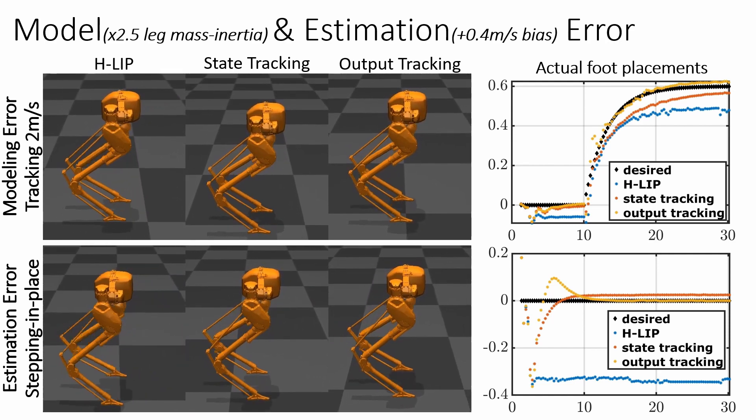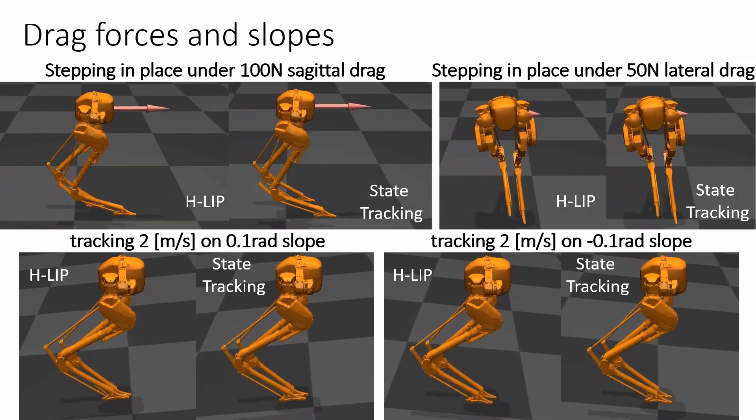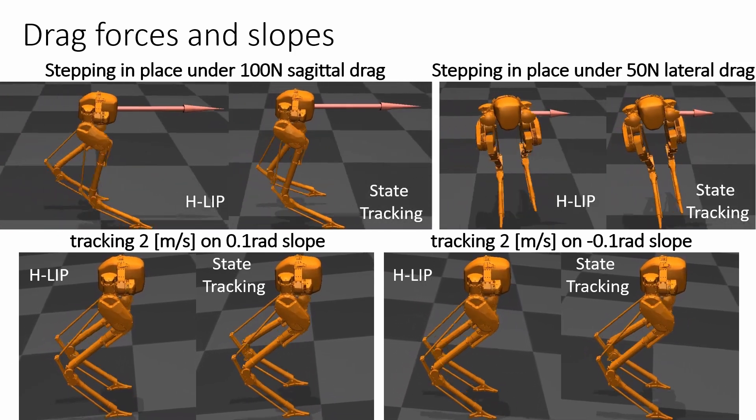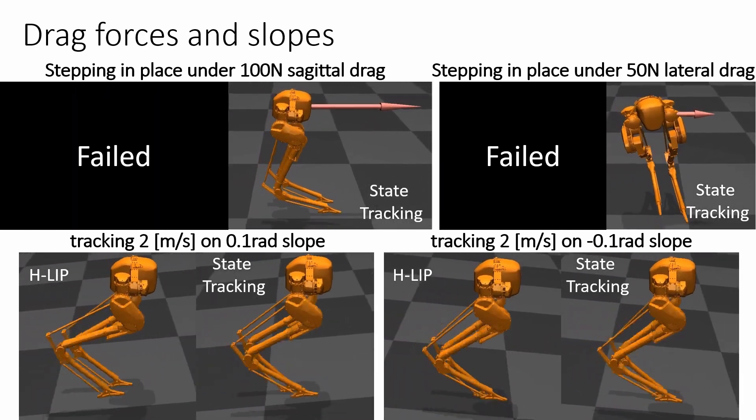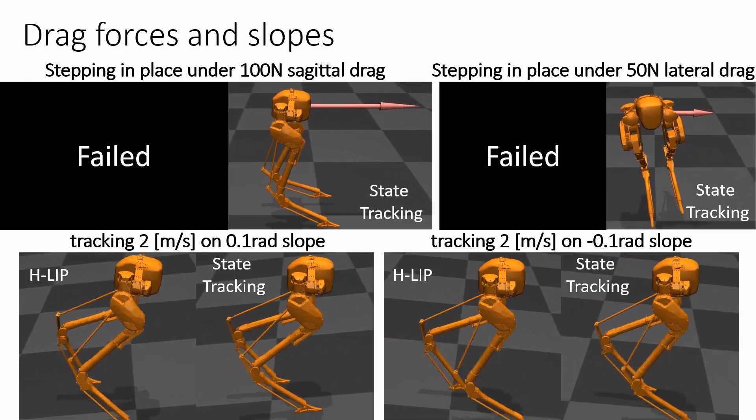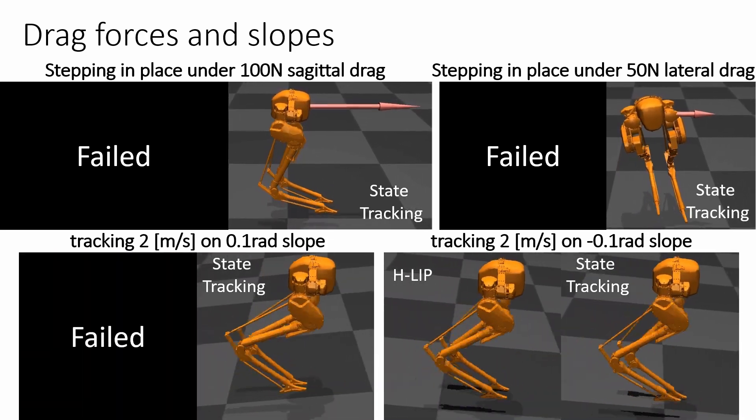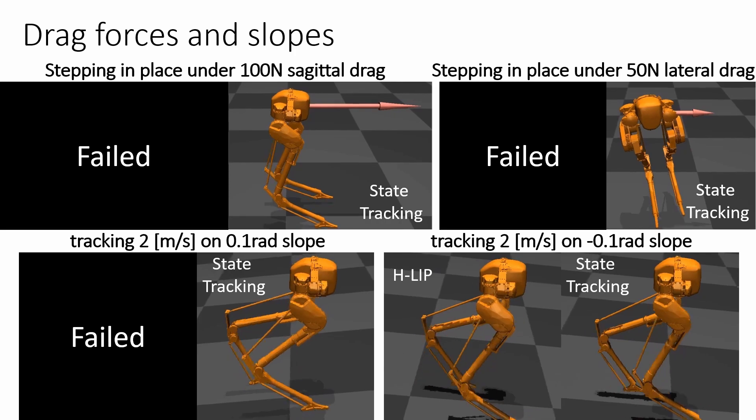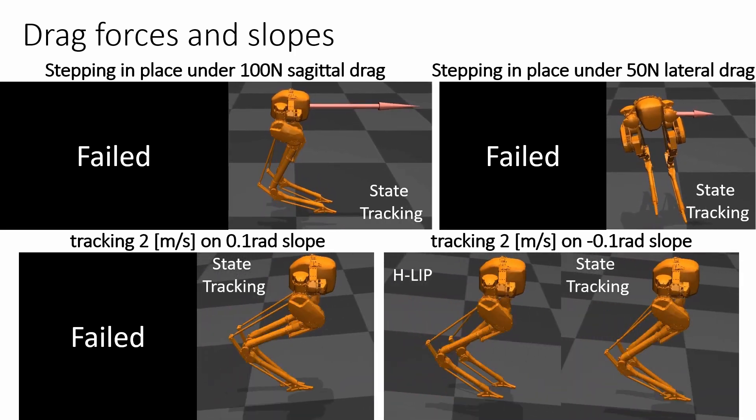The method is also evaluated under external drag. CASI is commanded to step in place, while external forces with 100 N and 50 N are gradually applied to its pelvis. With the baseline approach, CASI is dragged around and will eventually fall. On the other hand, with the adaptation, the robot can converge back to stepping in place by finding its new equilibrium.